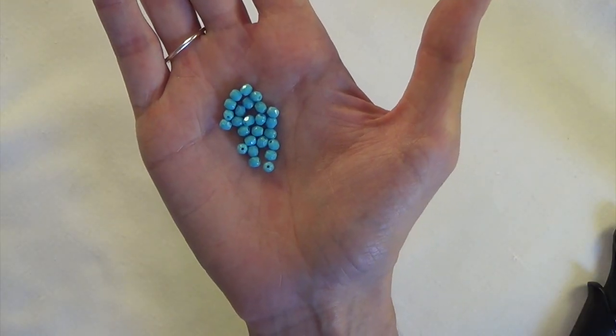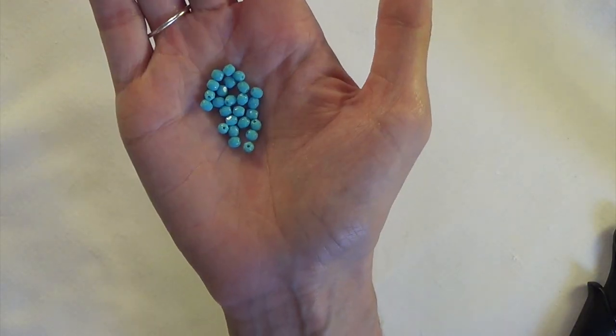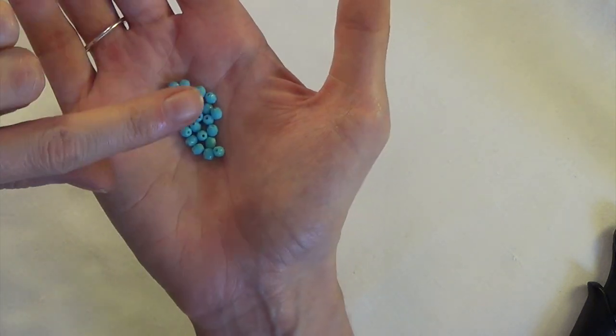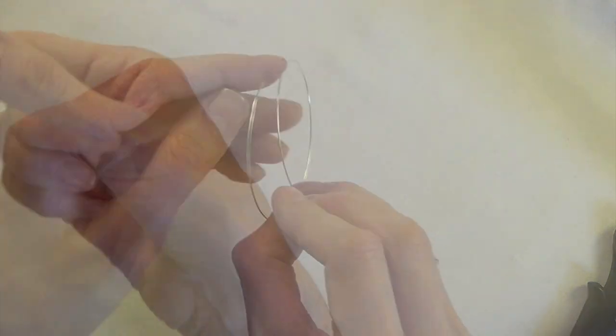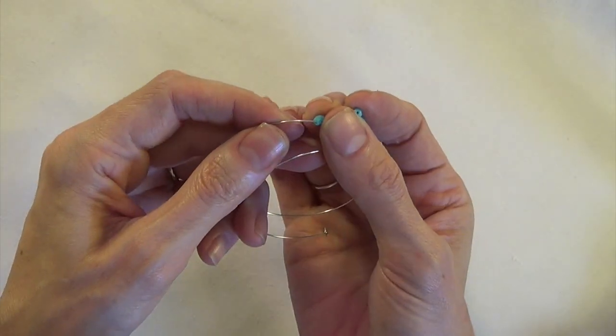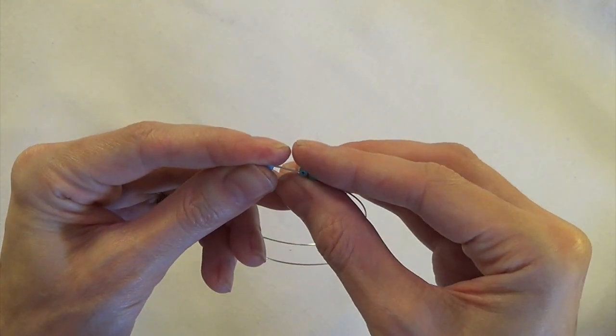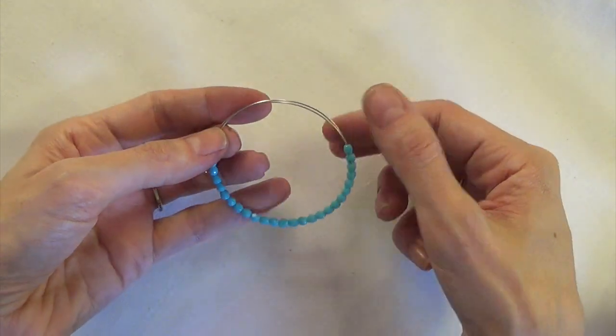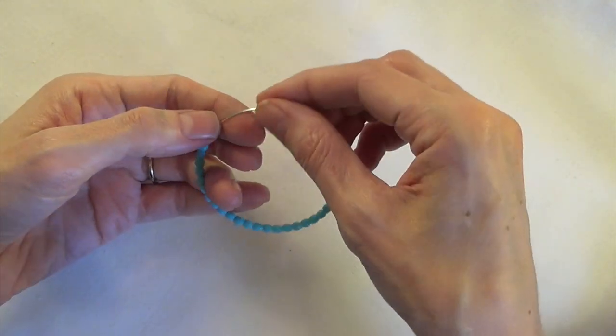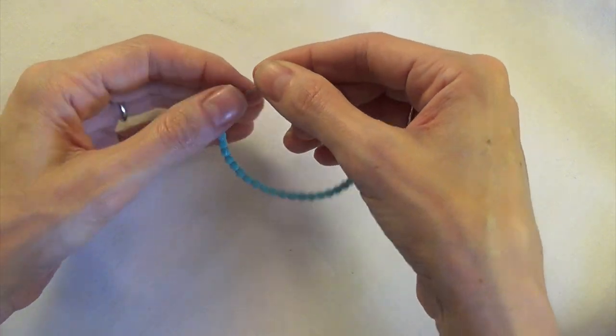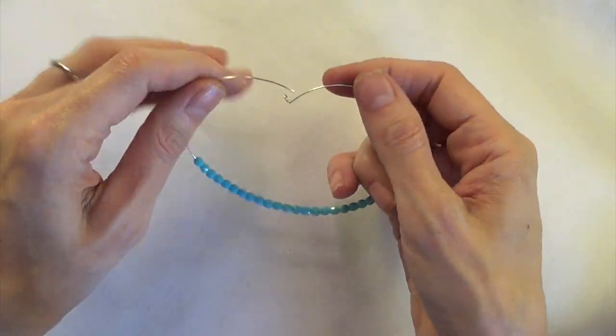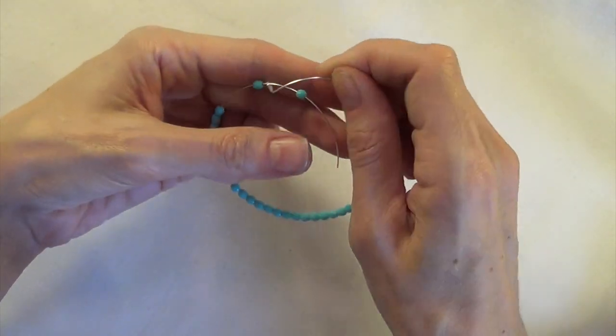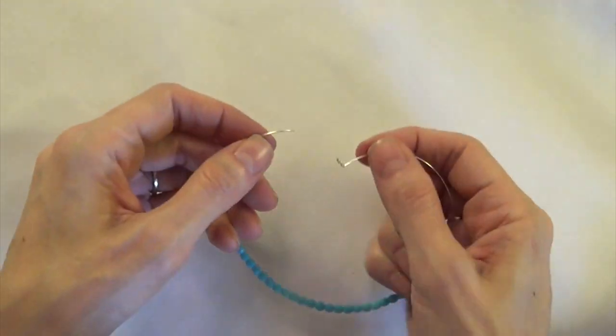I'm using four millimeter check glass beads and for this size you'll need about 24 or 26 of them. Just make sure that the holes are going to be big enough to fit over 22 gauge wire which is about 0.64 millimeters in diameter. Okay that looks good to me so now that I've got my beads where I want them I'm going to go ahead and slide the other end of the wire through the open loop.